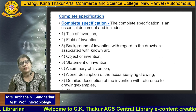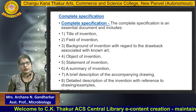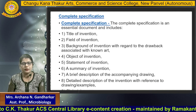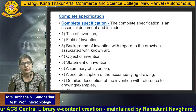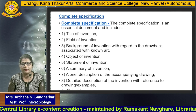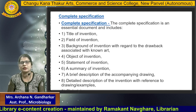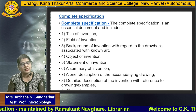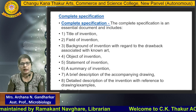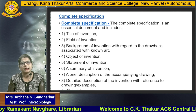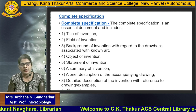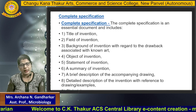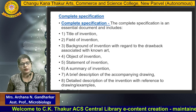In case of the complete specification, a certain number of documents are required. First, the title of the invention; then the field of invention; then the background of the invention regarding drawbacks associated with the known art; then the objective or object of the invention; statement of the invention; brief summary about the invention; a brief description of the accompanying drawings; and the detailed description of the invention with reference to the drawings or examples; and the claims according to your patent.